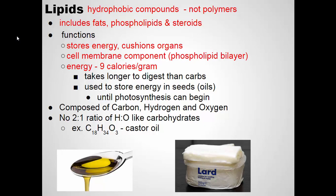Lipids are made of the same elements as carbohydrates: carbon, hydrogen, and oxygen. But they're found in a different ratio. Carbohydrates have two hydrogens for every oxygen. Lipids do not have that ratio. For example, here is castor oil — its chemical formula is C18H34O3. Lipids have much more hydrogen than they do oxygen.